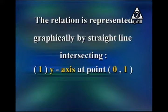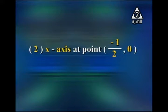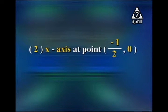The vertical part between the origin and the y-intercept is 1 unit. For the intersection with the x-axis, set y = 0 and substitute; you find the point is (−½, 0).